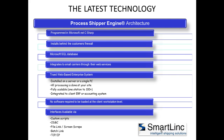The architecture behind Process Shipper is the latest technology available. It's programmed in Microsoft .NET and C# and utilizes a Microsoft SQL backend database. It also integrates to the small parcel carriers via their web services. It is a web-based enterprise application installed either on a server or a single PC, so all processing is done at your site. It's a fully scalable solution offering one to unlimited stations, and we fully integrate it to ERP or accounting packages. The interfaces we offer are listed below.